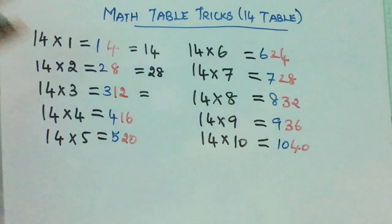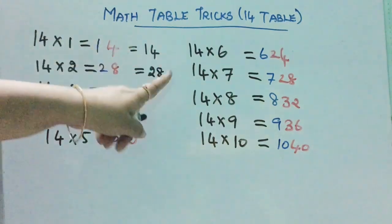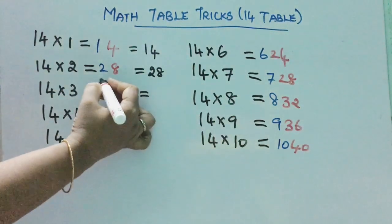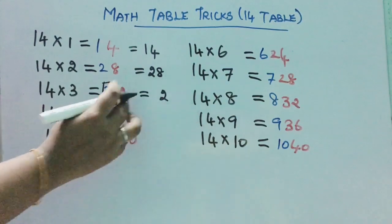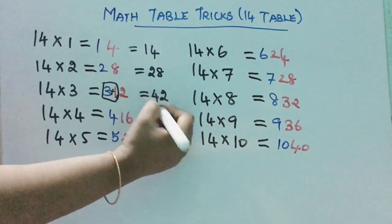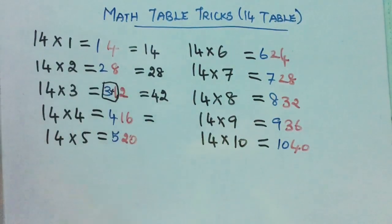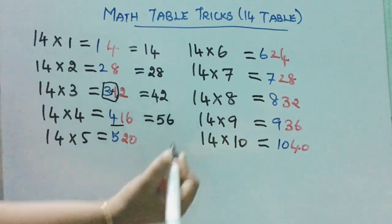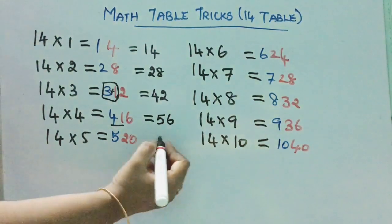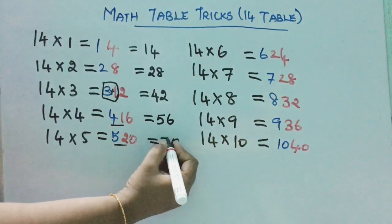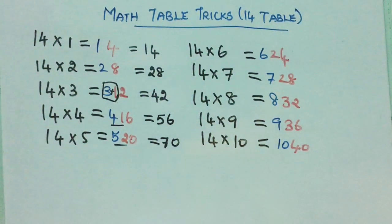2-digit numbers we write as-is — those are the answers. So we are going to solve from 3 digits only. 14 ones are 14, 14 twos are 28. For 14 threes: take the last digit as-is and add the two numbers — 3 plus 1 gives 4, so 42. 14 threes are 42. Similarly take 6 as-is, add 4 plus 1, you get 5, so 56. 14 fours are 56. Take 0 as-is, add 5 plus 2, you get 7, so 70. 14 fives are 70.